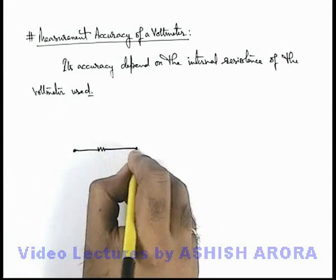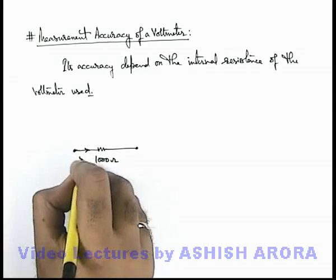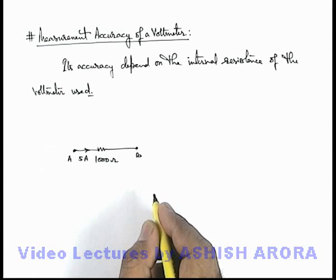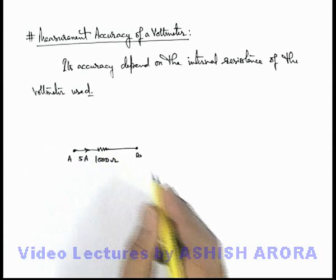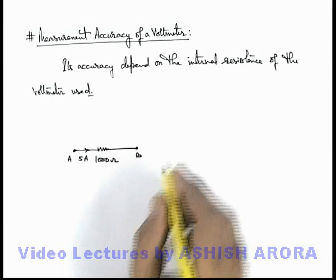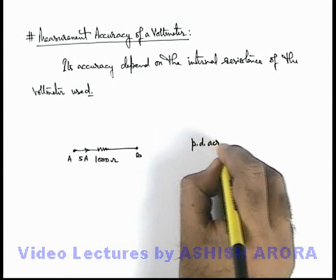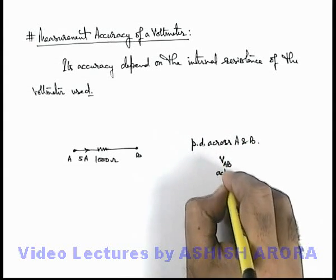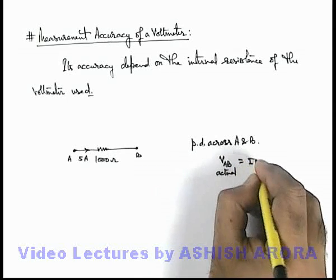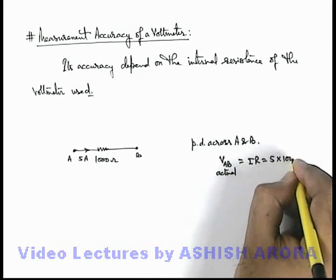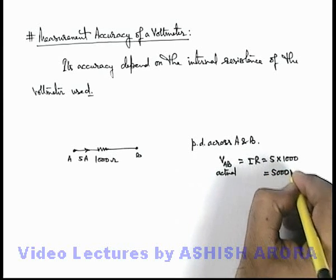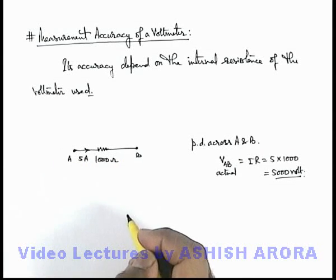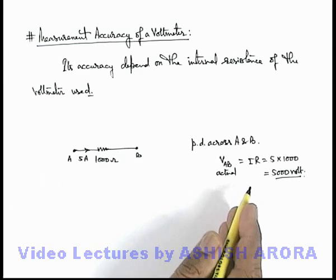Say we are given a resistance of 1000 ohms through which a current of 5 amperes is flowing, and we are required to find the potential difference across terminals A and B. The actual potential difference V_ab equals I times R, which is 5 multiplied by 1000, giving us 5000 volts. This is the potential difference across the resistance of 1000 ohms.